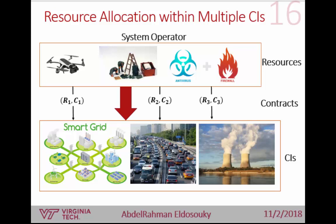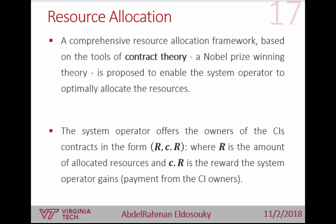We model the resource allocation problem using contract theory — a Nobel Prize-winning theory. In contract theory, we have multiple decision makers, but only one has the power to design contracts and offer them to others; the other decision makers can only choose to accept or reject. This is very suitable for our problem because the system operator designs contracts and offers them to individual infrastructures, which can only choose to accept or not.